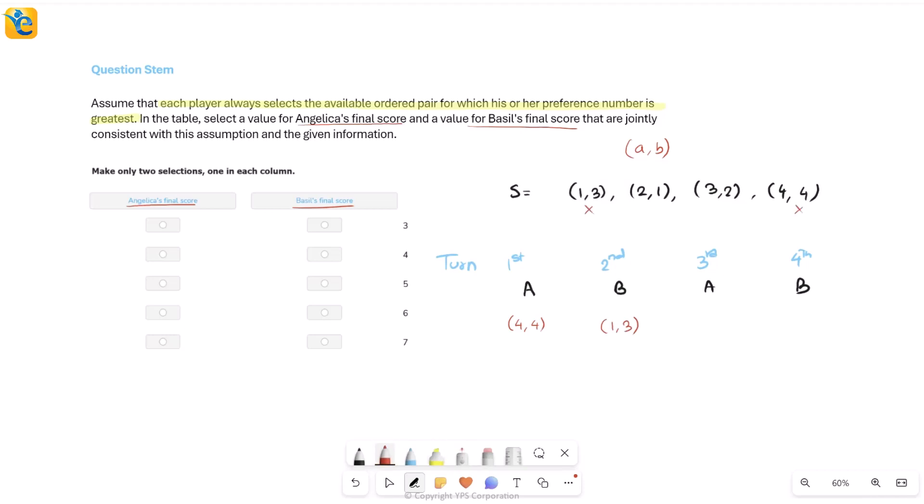Then again you come back here. Let me actually make small crosses to show which ones have been used up. Now you have these two. Again think about A's preference numbers, the first ones. The greater one is 3 here. That means A's next pick is 3,2 and then Basil doesn't have a choice. It is 2,1. Once the picking is done, there's nothing left.